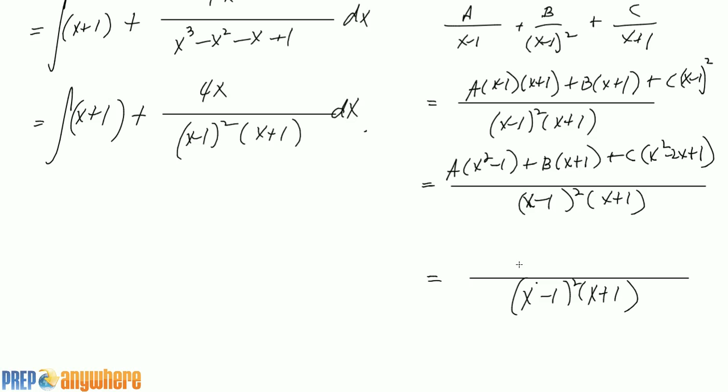Okay, so x squared, the coefficients of x squared will be A and C. X is going to be B and minus 2C, and constants are minus A and B and C.